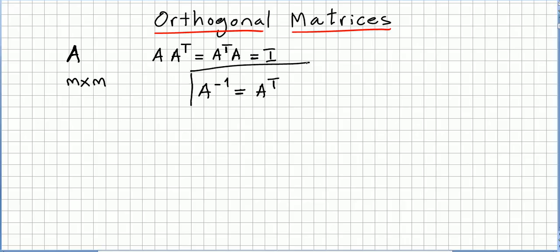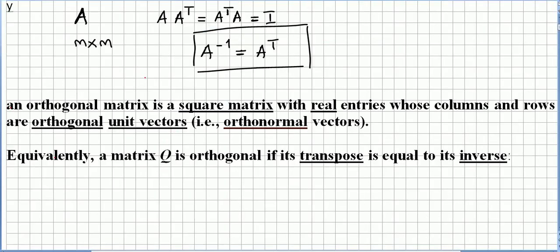Probably you'll see this written this way in your book. An orthogonal matrix is a square matrix with real entries whose columns and rows are orthogonal unit vectors, that is, orthonormal vectors.